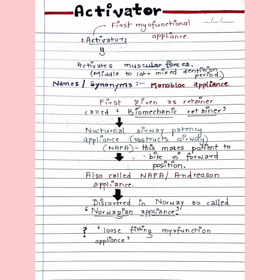It is given during growing periods because it is easier to modulate the mandible then. If you get a question on this, start the answer with the synonyms. It is also called the monoblock appliance. Since it was first given as a retainer, it is also called the biomechanic retainer. It is also called NAPA — Nocturnal Airway Patency Appliance — since it was given in glossoptosis patients.